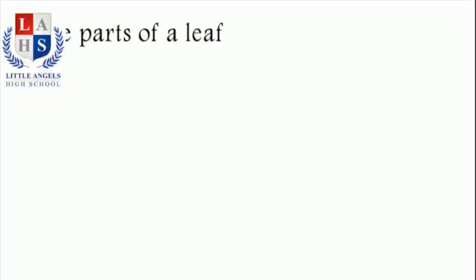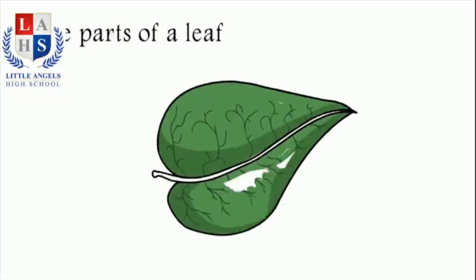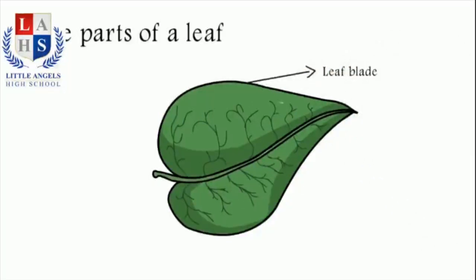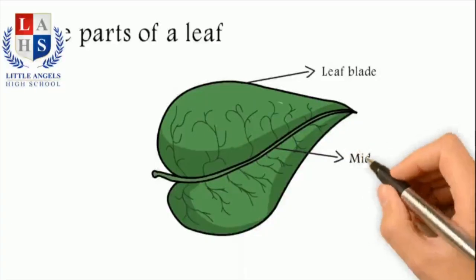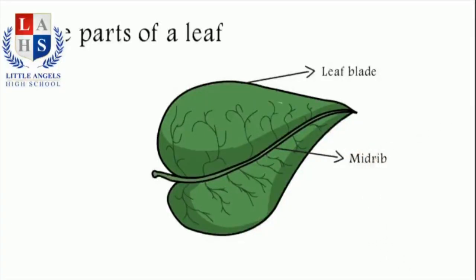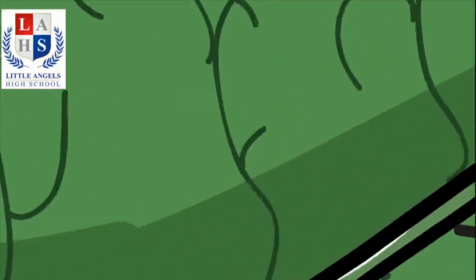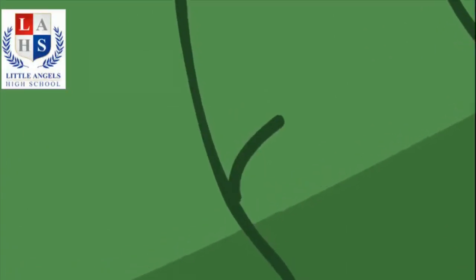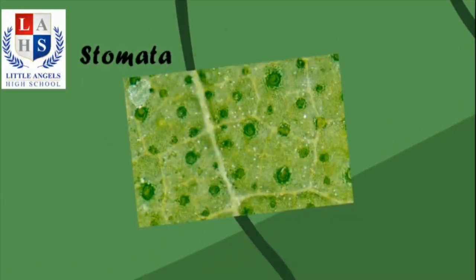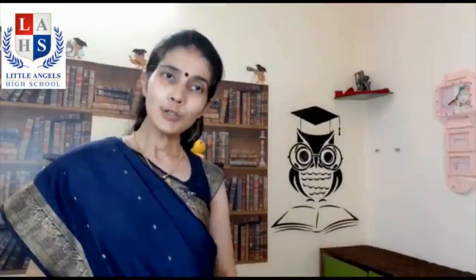Our next topic is the parts of a leaf. The green exposed portion of the leaf is known as the leaf blade. The thick middle portion is known as the midrib, and the branches arising from the midrib are known as veins. Apart from these, there are small openings on the undersurface of the leaf that are called stomata, and these help in the exchange of gases.